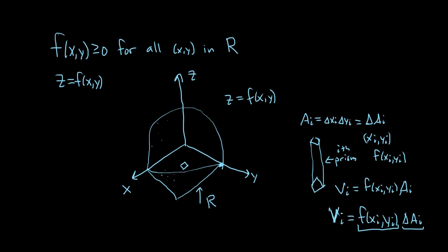If you have a bunch of rectangles here, say you have n rectangles, you have n prisms. What you can do is form the sum of all the volumes of those prisms. That will give you the sum from i equals 1 to n of v sub i. Well, v sub i is just the height of the prism, f of x sub i, y sub i, times the area of the prism, delta a sub i. So this is the sum of the volumes of the prisms, approximately equal to the volume. Imagine we have lots of little prisms here, n prisms.